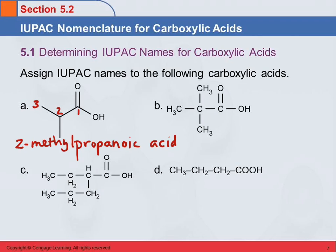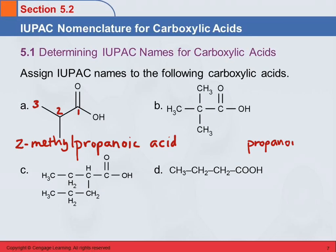Let's do example B. Here's our carboxyl carbon: 1, 2, 3. No matter how we count, we just get 3 carbons, so this is also propanoic acid. What is attached? There's a methyl here and a methyl here. Carbon 1 is the carboxyl carbon, then 2 and 3. This is very similar to A, but it looks different because this is a condensed structural formula whereas A was a skeletal line-angle drawing. This would be 2,2-dimethylpropanoic acid.